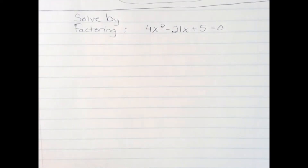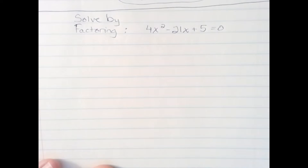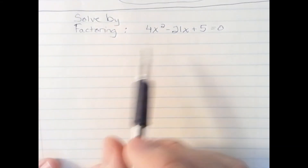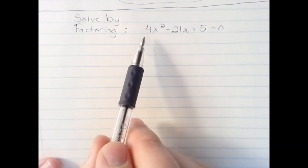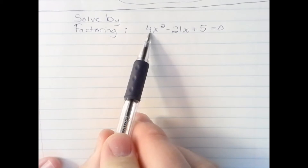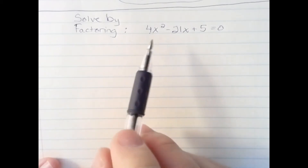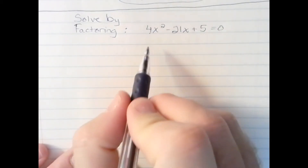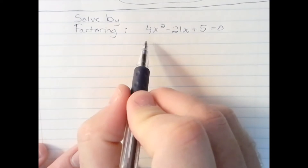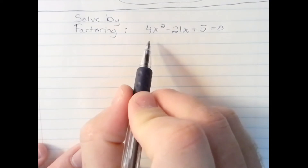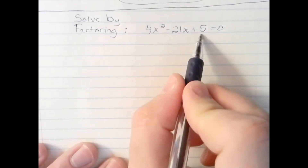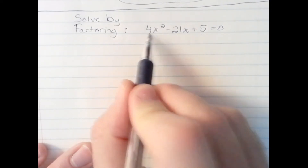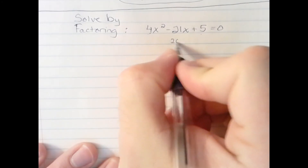In this equation we're asked to solve by factoring. The factoring is a little more complicated given that we have a coefficient other than 1 for the A term. This technique of factoring is called the AC method, where I take the A number times the C number — in this case 4 times 5 — to get 20.